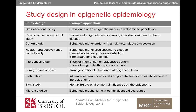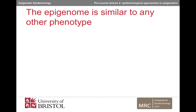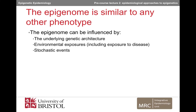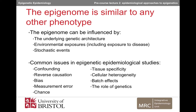However, if you are interested in whether an exposure or outcome is associated with an epigenetic mechanism, regardless of causality, cross-sectional data may be sufficient. As we learnt in Lecture 1, epigenetic mechanisms can be influenced by genetics, environmental exposures, and random changes over time. This means that observational studies of epigenetic mechanisms are subject to all the same issues that face observational studies of other phenotypes, such as cholesterol or BMI. These common issues include confounding, reverse causation, bias, measurement error, and chance.